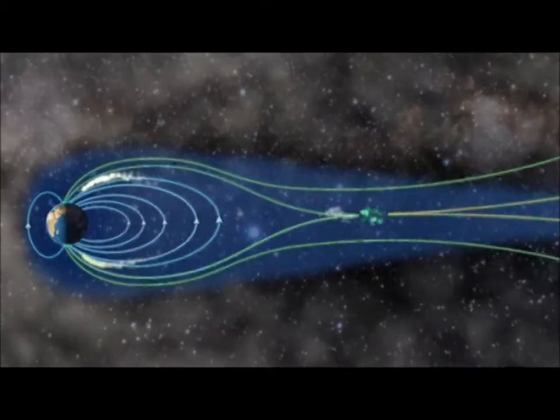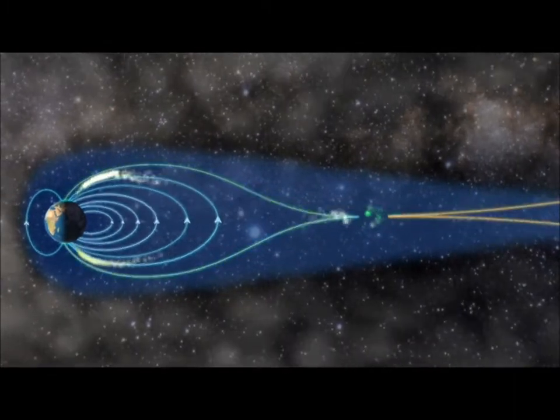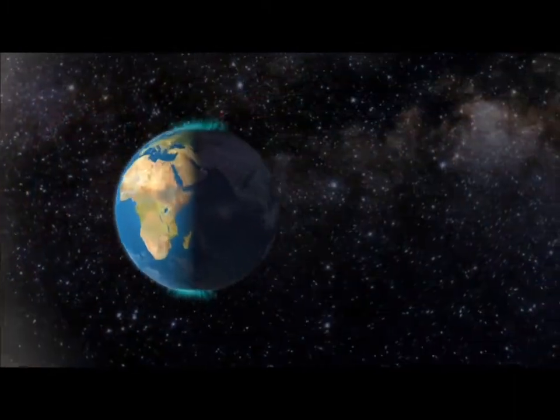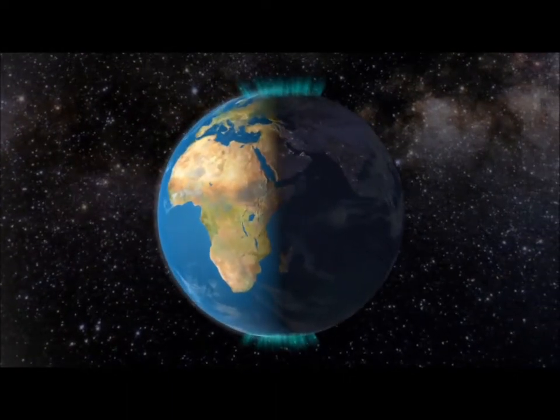And gas from the solar storm streams along the magnetic lines towards the poles on the night side. This is the nighttime aurora.